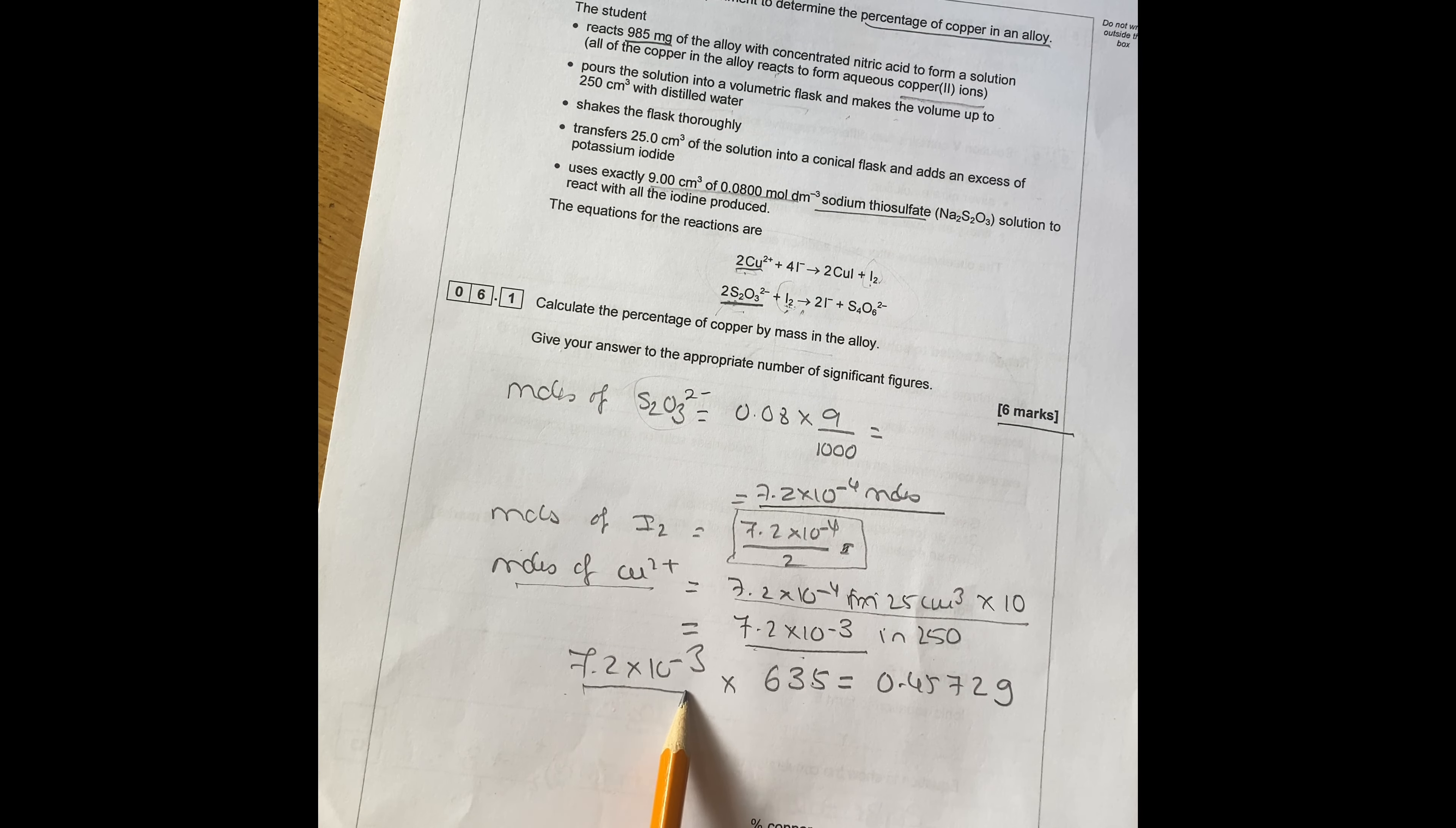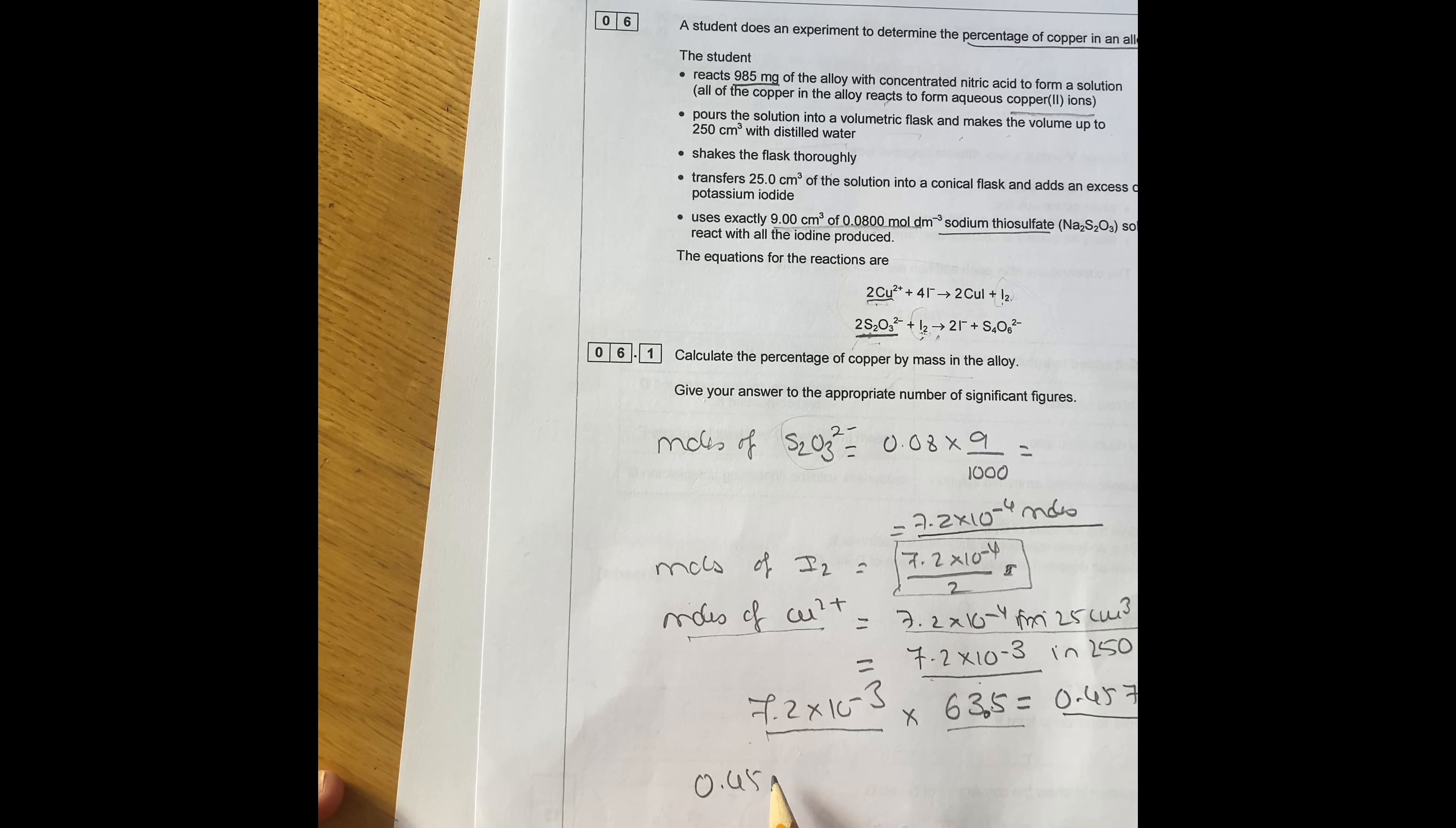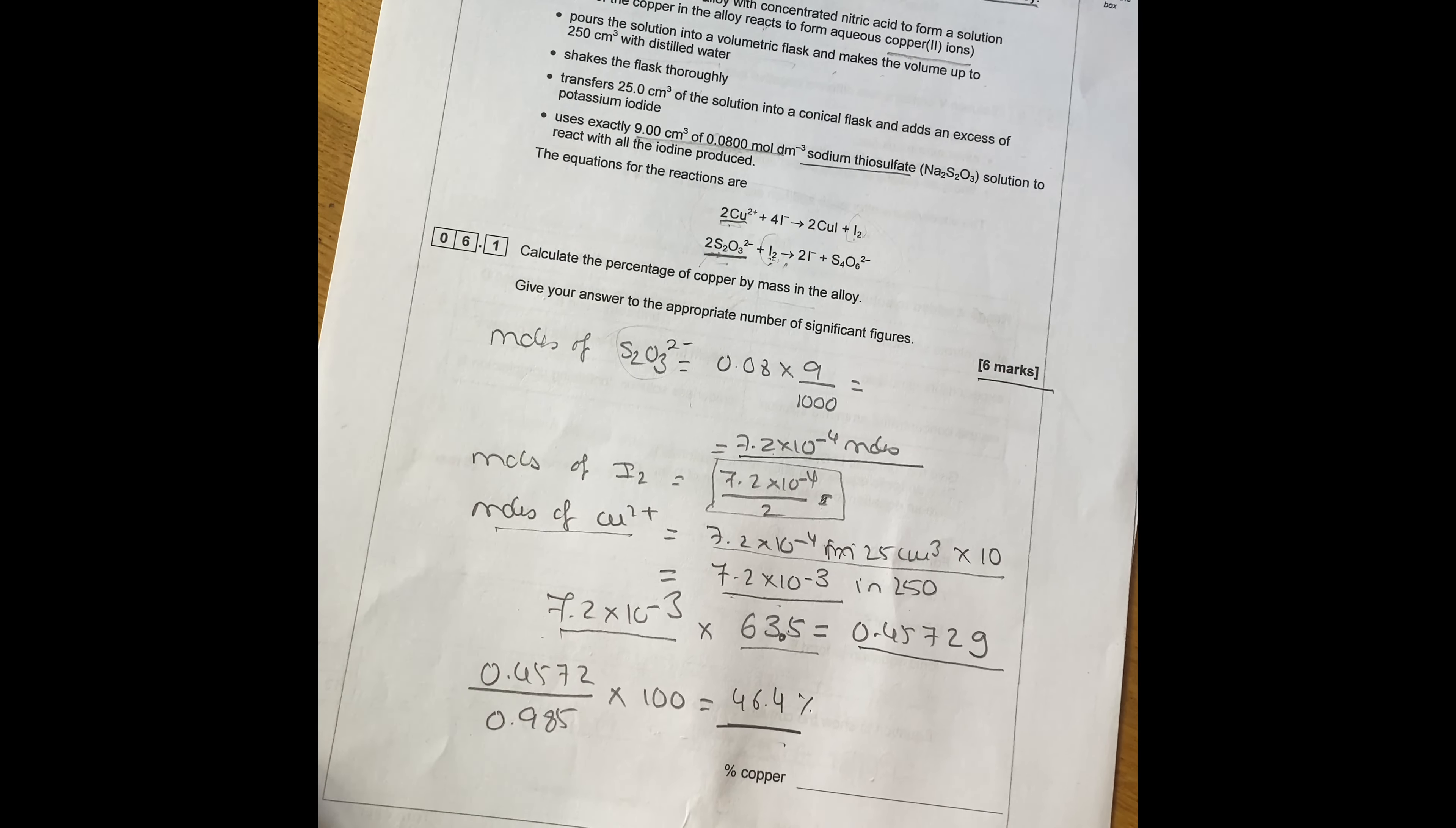Then you take 7.92 times 10 minus 3 times by molar mass of copper, which is 63.5. It gives you the grams, which is 0.4572 grams. Now you've got to do the percentage mass in the alloy. So you've got 985 here. So you've got 0.4572 divided by, you've got to change that for grams. So that's going to be 0.985 times 100. And that will give you 46.4%. So you have to answer in 3 sig figs because that's the 3 sig figs everywhere else here. I hope that was helpful for you.